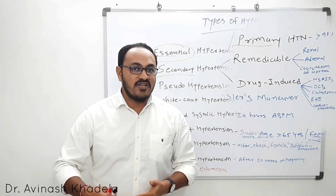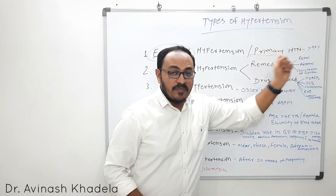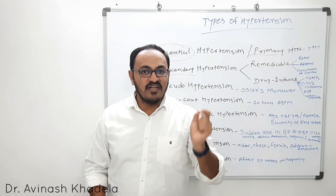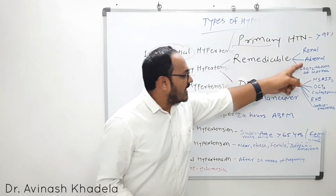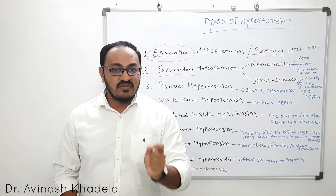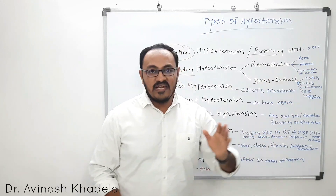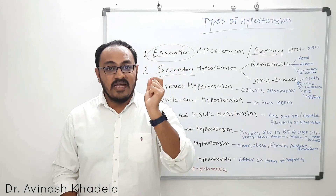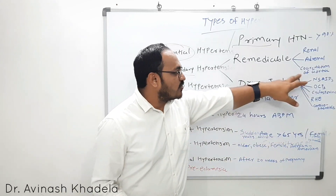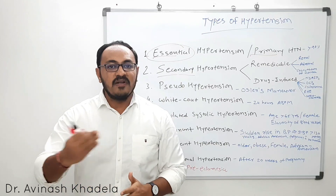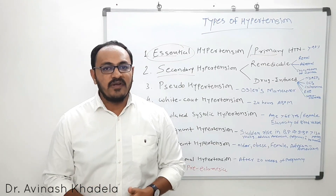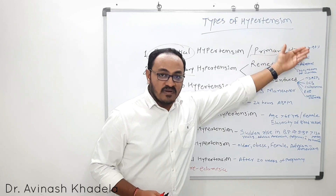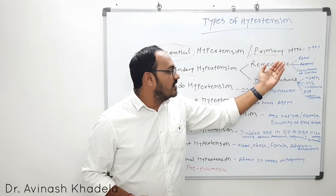Remediable hypertension arises due to any abnormal condition from the renal system, the adrenal system, or some physiological or anatomical abnormality like coarctation of the aorta. Renal vascular disease compromises the renal system, leading to a rise in blood pressure. Adrenal system disease like pheochromocytoma — a tumor of the adrenal gland — elevates blood pressure by secreting excess epinephrine and norepinephrine. Coarctation of the aorta causes narrowing, increasing pressure in the aortic system.